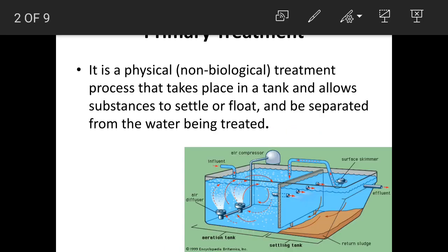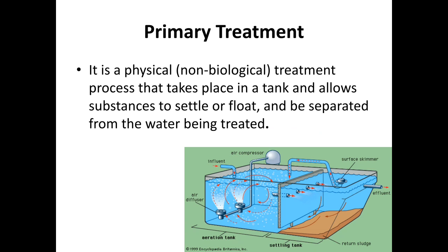Let's look at the definition of primary treatment. It is a physical treatment process that takes place in a tank and allows substances to settle or float and be separated from the water being treated. Primary treatment basically involves the process of sedimentation and settling.